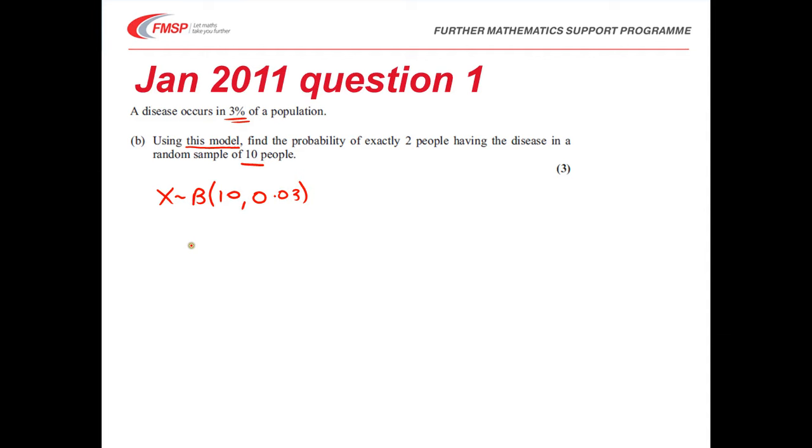The calculation is 10 combination 2. We have 2 successes, so 0.03 squared, and we have 8 failures. So that is the calculation we're going to do. That's going to give you a method mark, and then calculating that will give you your accuracy.